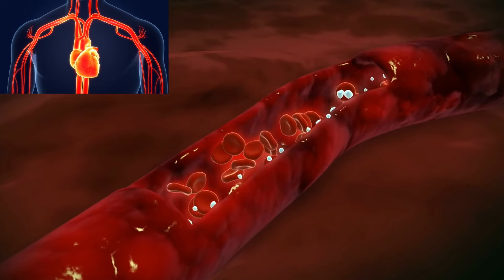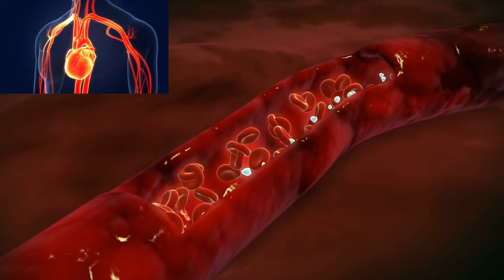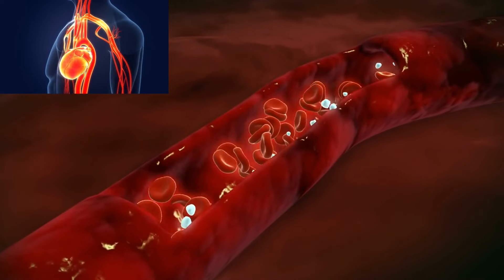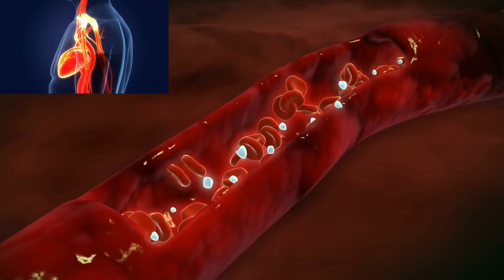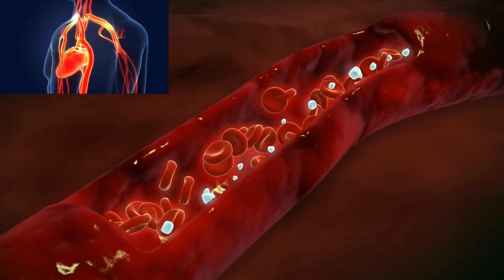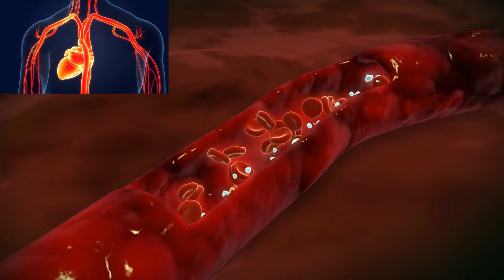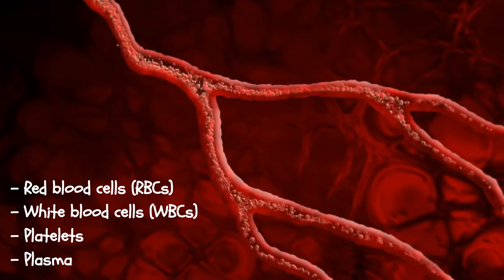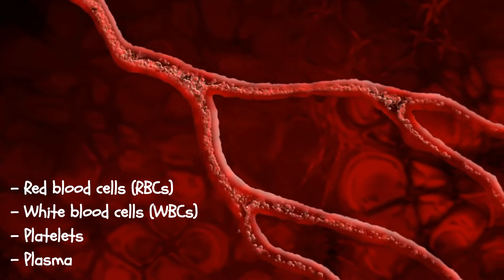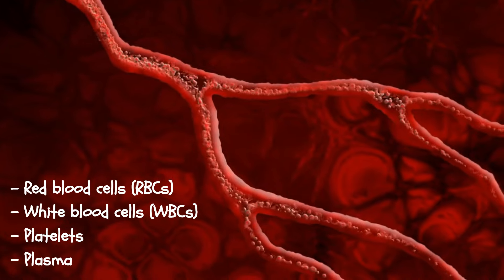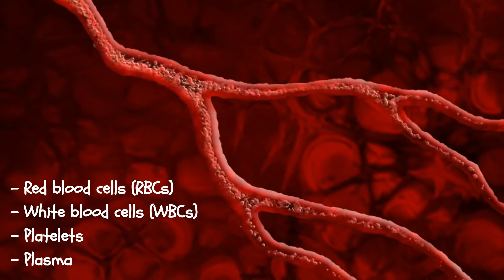It serves as a crucial transporter, carrying gases such as oxygen and carbon dioxide, essential nutrients, and hormones. Additionally, it aids in maintaining acid-base homeostasis. It comprises red blood cells for oxygen transport, white blood cells for immune defense, platelets for clotting, and plasma for nutrient transport and maintaining fluid balance.